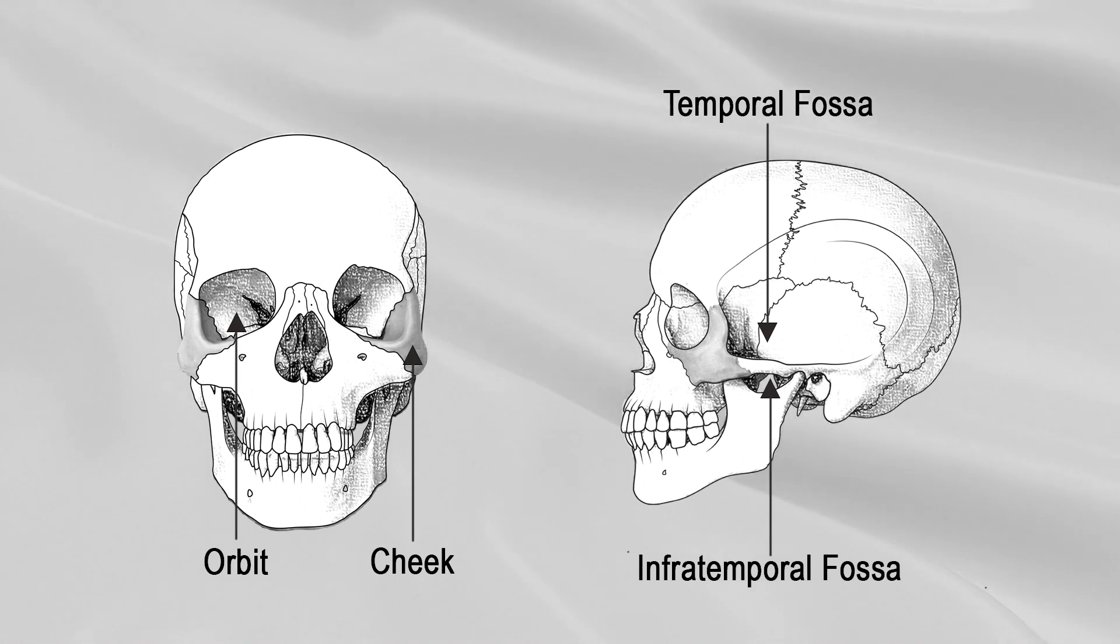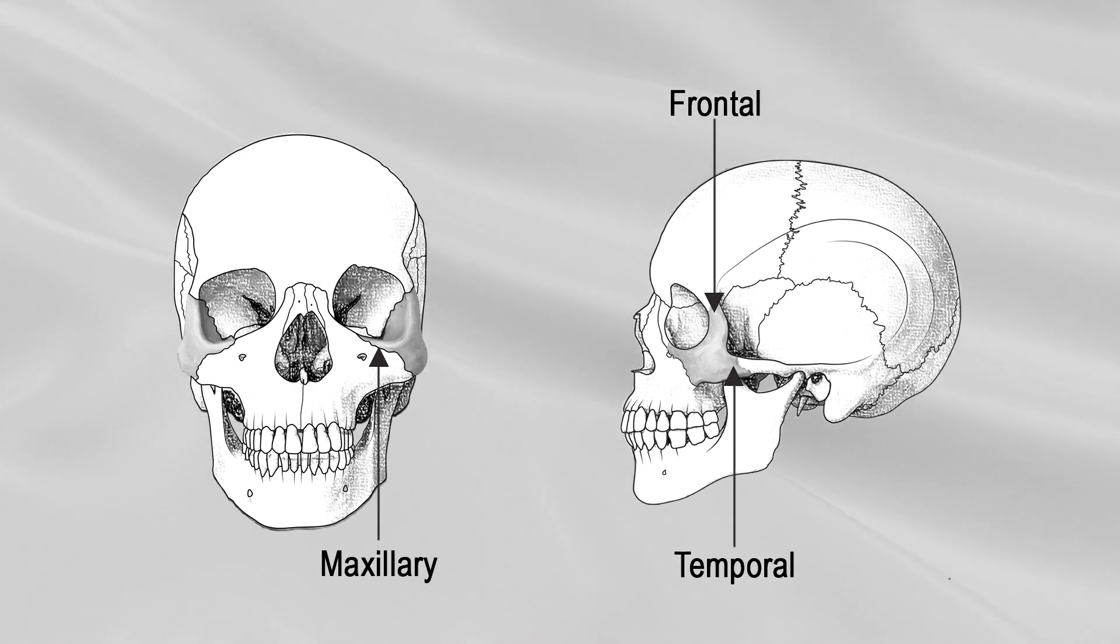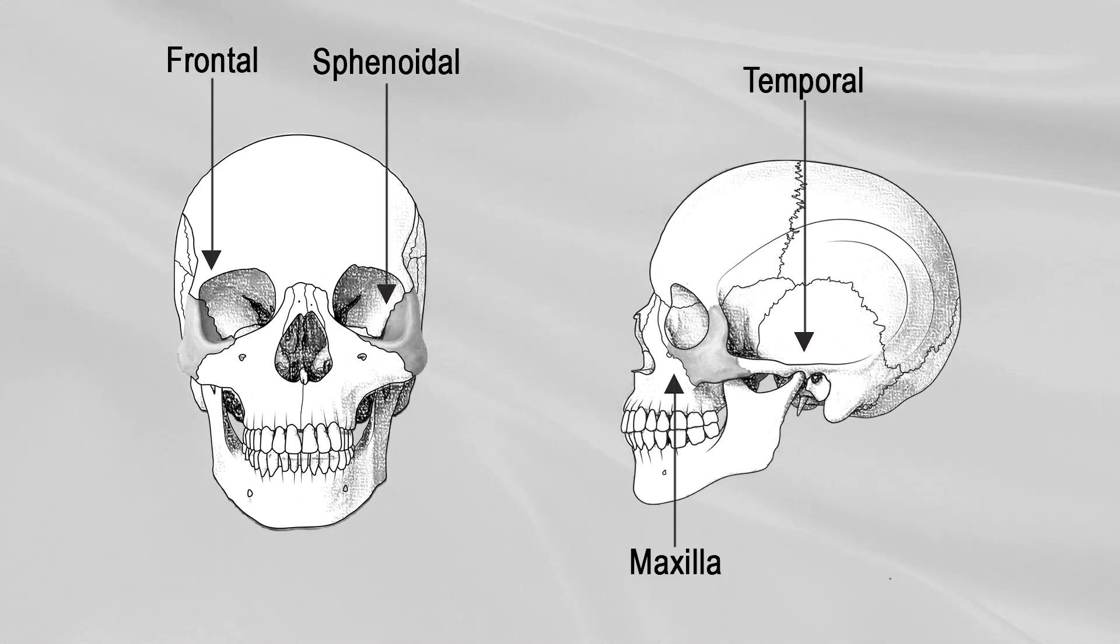It presents two surfaces, lateral and temporal, and three processes: the maxillary, frontal, and temporal. The zygomatic articulates with four bones: the frontal, sphenoidal, temporal, and maxilla.